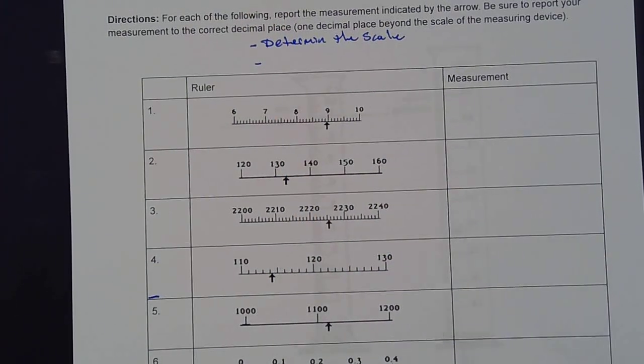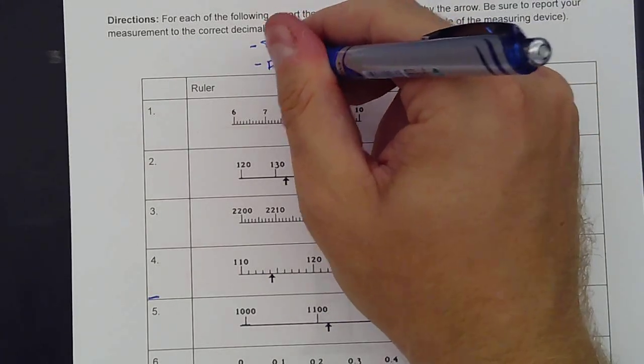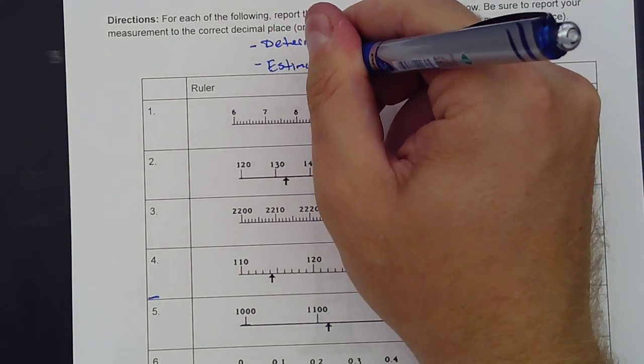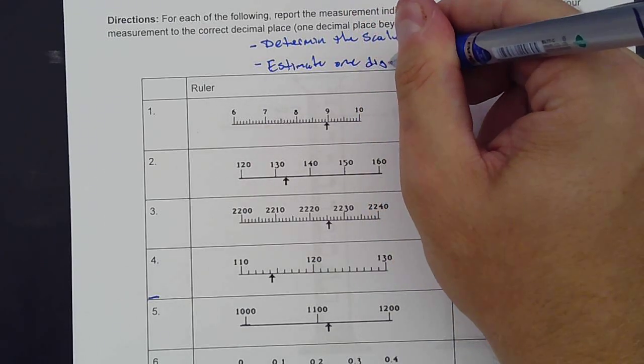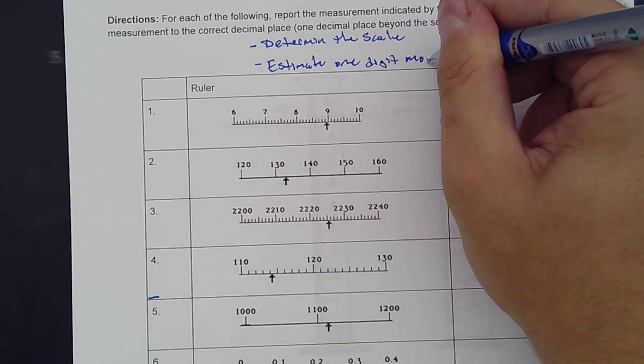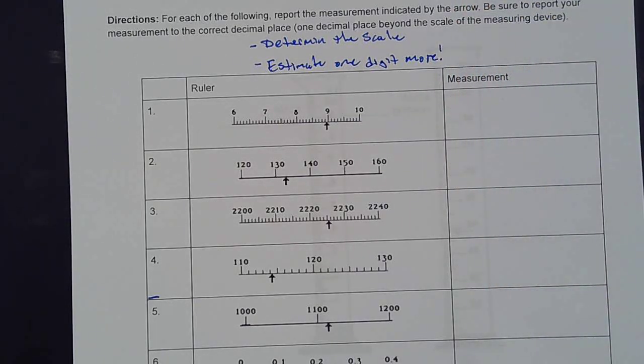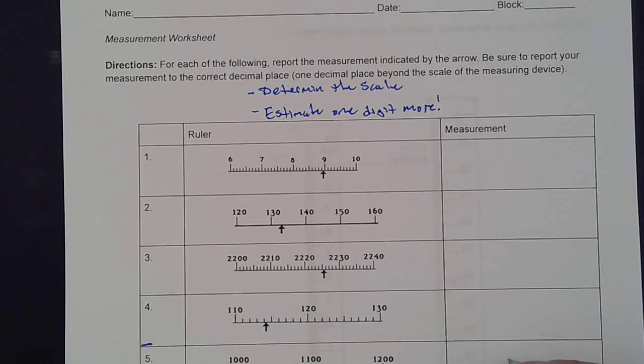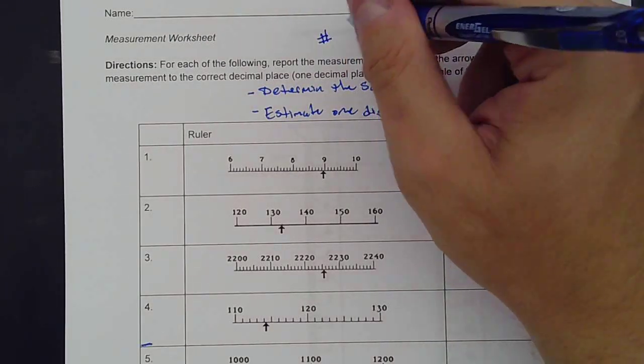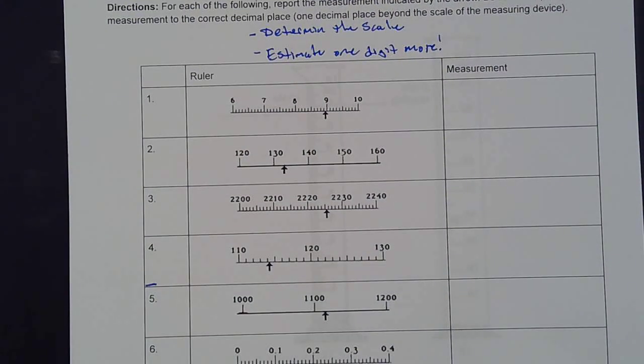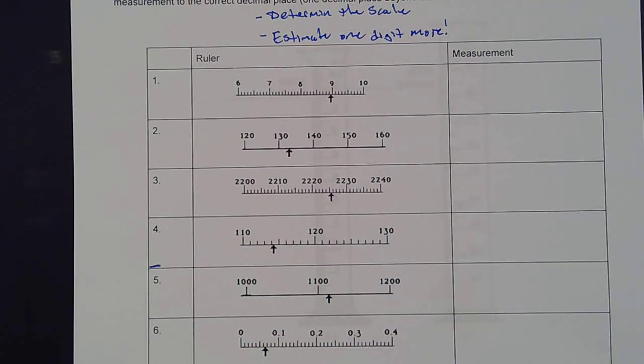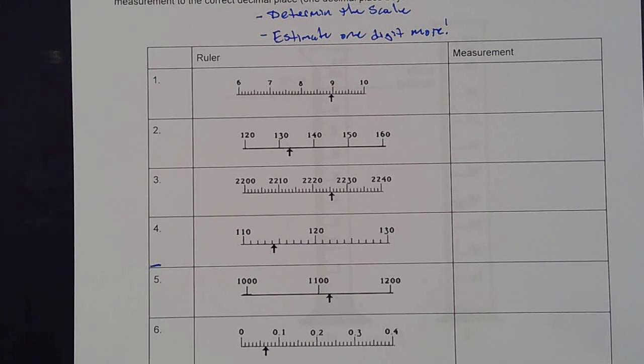Our second rule is that we can estimate one digit more. A measurement is just a number with units attached. Let's look at what we can do for our measurements here.